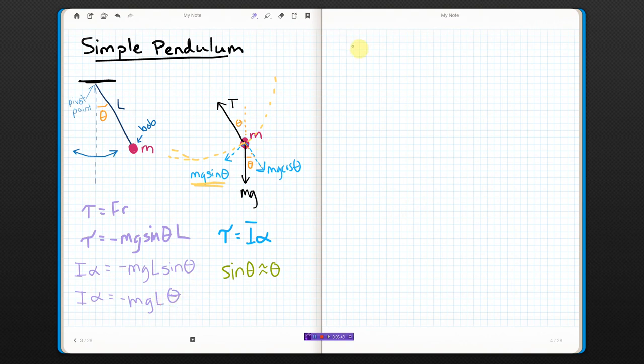So, if we keep the angle small, we can say this is just negative MGL theta, which is gonna make things a lot easier later, so we can write that, in which case, then, alpha ends up being negative MGL theta over moment of inertia. The negative is just telling us that this is a restoring force. Basically, this is trying to pull the bar back to this dotted line in the equilibrium position.